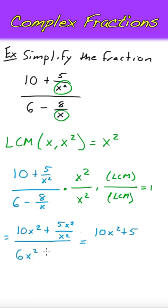Distributing across the bottom gives 6x squared minus 8x squared over x, or, if we simplify, 8x.